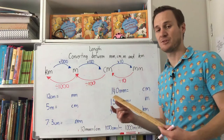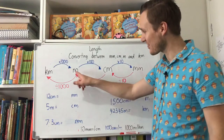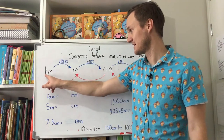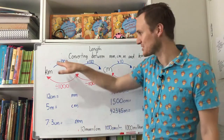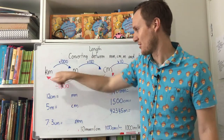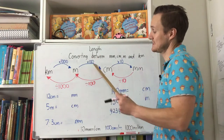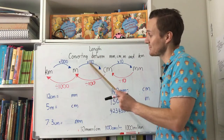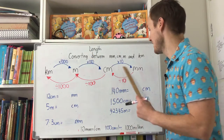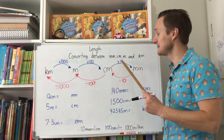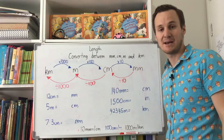When we're converting back and forth between them — if we're converting kilometres to metres, because there are 1000 metres in a kilometre, we times it by 1000. Going further down, converting metres into centimetres, because there are 100 centimetres in a metre, we times it by 100. And because there are 10 millimetres in a centimetre, when we're going from centimetres to millimetres, we times it by 10.